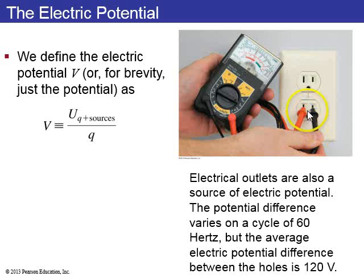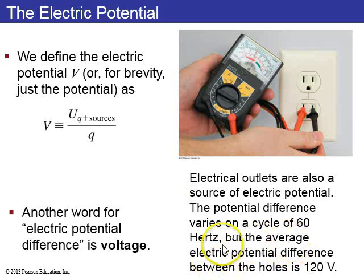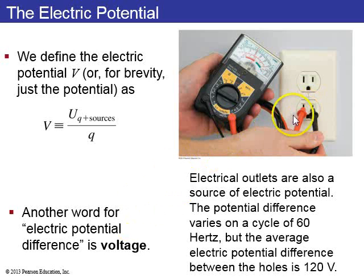You have to be very careful if you're making a measurement like this, that you don't get zapped. It's very, very dangerous to stick any kind of metal into an electrical outlet, obviously. Another word for electric potential difference is voltage. So instead of saying the electric potential difference from one side to the other is 120 volts, you can say the voltage is 120 volts.